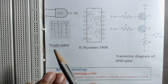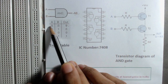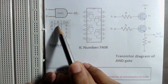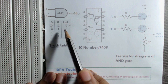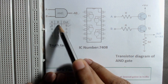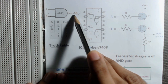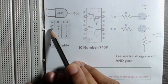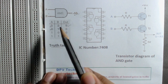Here is the truth table of an AND gate. When we apply 0 at terminal A and 0 at terminal B, we get 0 at the output. It is just like simple multiplication: 0 × 0 = 0. That is why the output of an AND gate is written as A × B. Similarly, when we apply 0 at terminal A and 1 at terminal B, we get 0 at the output because 0 × 1 is also 0.